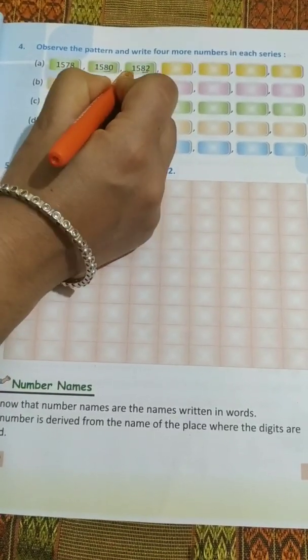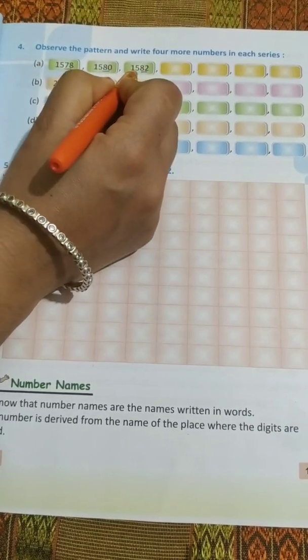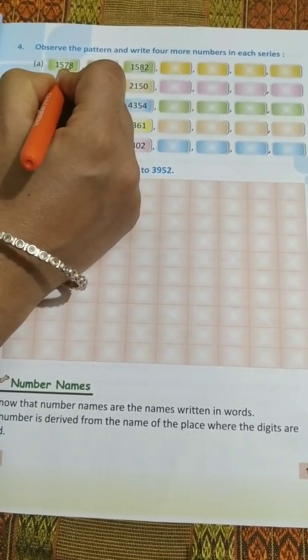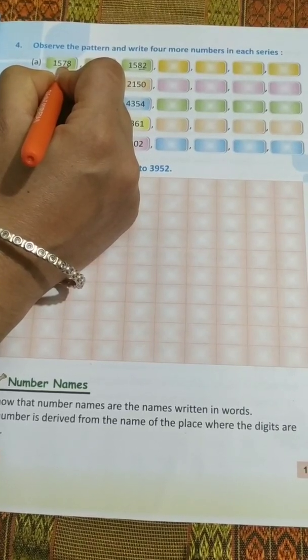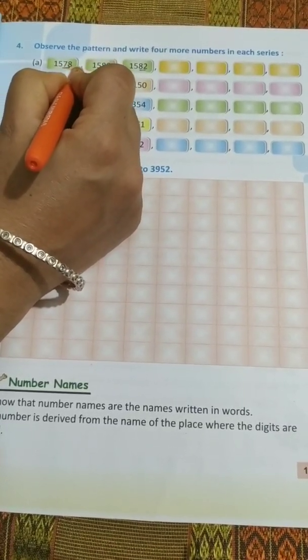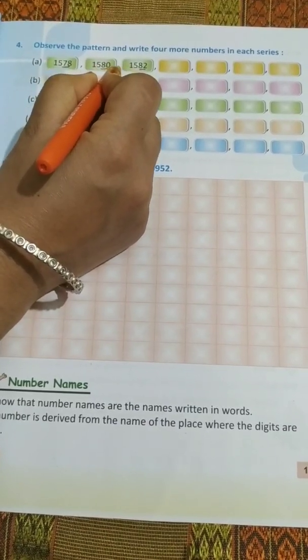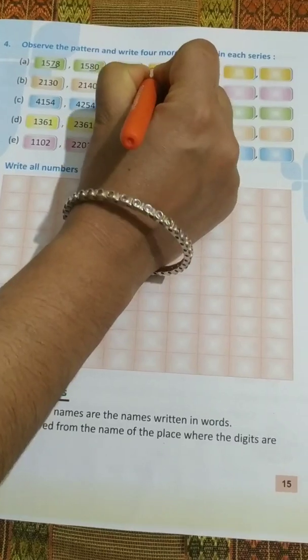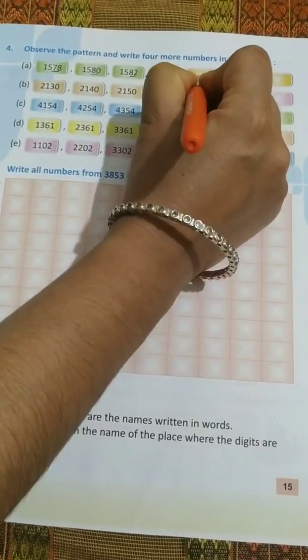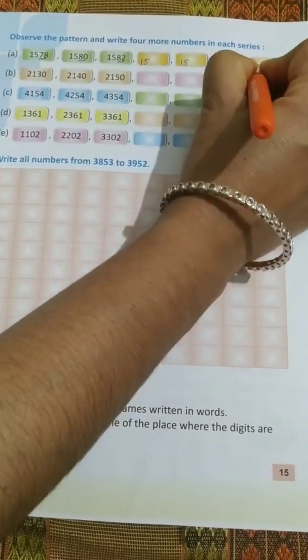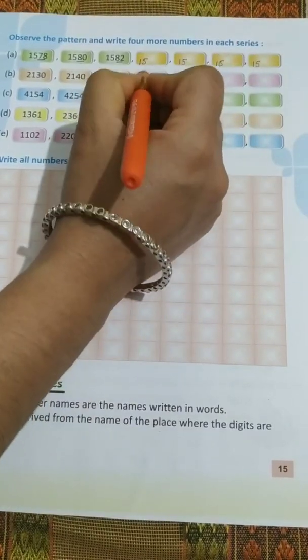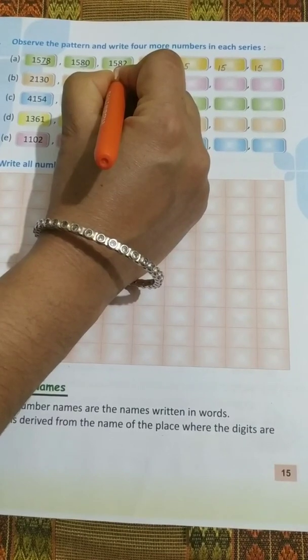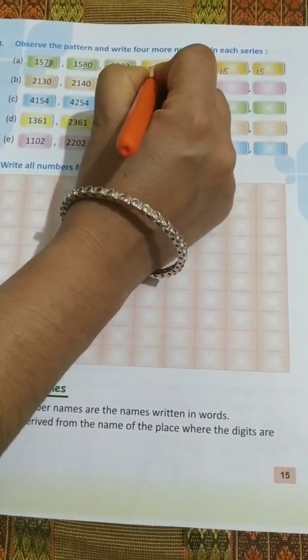15, 15, 15 same in all the numbers. 78 is changing to 80, means one number is skipped over here. 78, 79 is skipped, then 80 is written. 81 is skipped, 82 is written. You may write 15, 15, 15 beforehand to avoid confusion. 82 will change to 83, we have to skip. What will be the next?